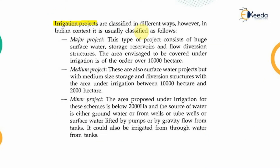Based upon this we are classifying the irrigation schemes. In the Indian context, irrigation projects are classified based upon the area which is irrigated. The major project category consists of large surface water schemes where the culturable command area is over 10,000 hectares. If the area is between 2,000 to 10,000 hectares, that is known as the medium type of irrigation project. If the area is below 2,000 hectares, that is known as the minor irrigation project, which is a separate wing in state government bodies.